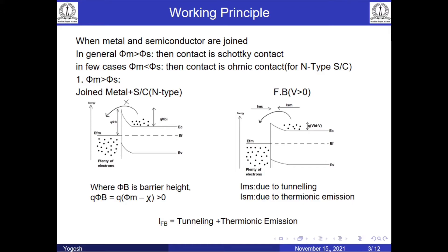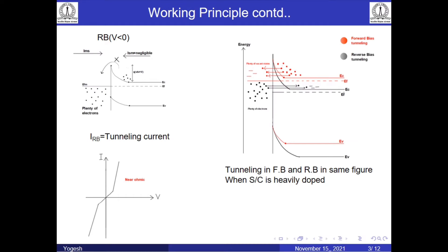At the junction there is a built-in barrier height. An electron from the semiconductor cannot jump this height and there is no conduction. Once we apply forward bias, bands will be lifted and the barrier height will be reduced. An electron with higher energy in the semiconductor can jump into the metal over this reduced barrier height. This process is called thermionic emission. ISM is the current due to this process, and IMS current corresponds to the flow of electrons from metal to semiconductor, which is very small comparatively. In case of reverse bias, bands come down and electrons cannot jump the increased barrier, so ISM is almost equal to zero.